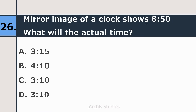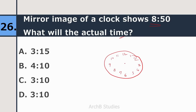Twenty-sixth question: the mirror image of a clock shows 8:50 — what will be the actual time? Drawing the clock face, 8:50 is almost near 9. The mirror image of that position places the hands near 3, so the actual time shown in the mirror is 3:10. The right answer is 3:10.